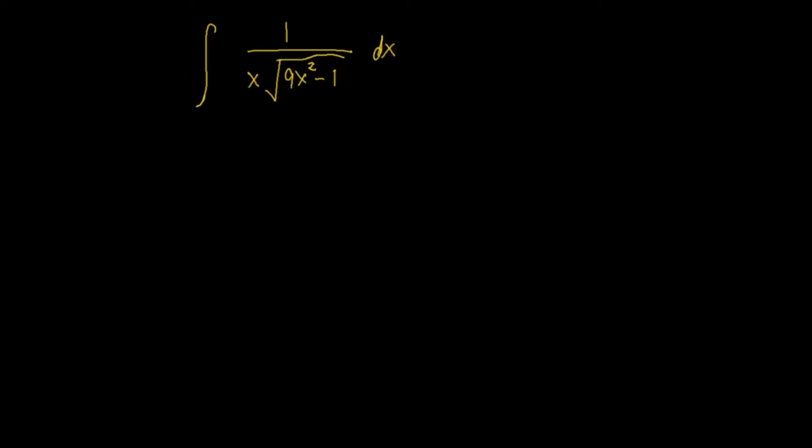Let's integrate 1 over x times square root of 9x squared minus 1 dx. What kind of integration technique would you use?